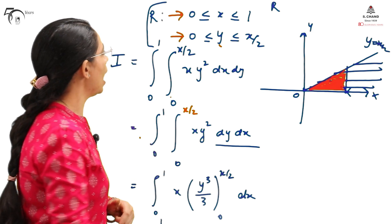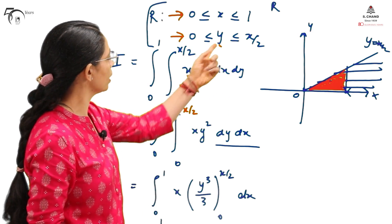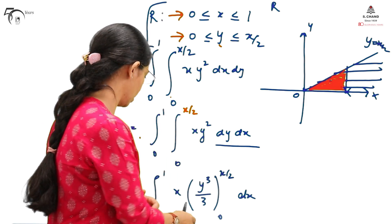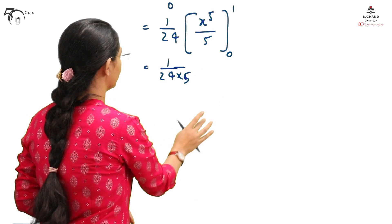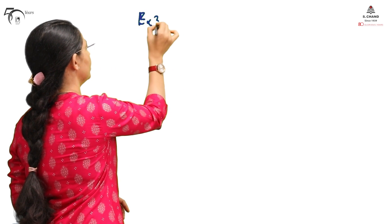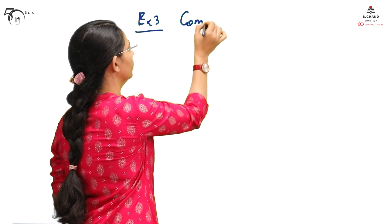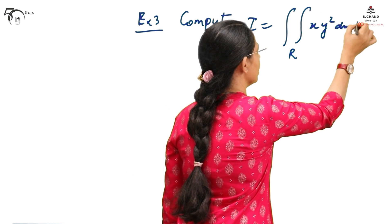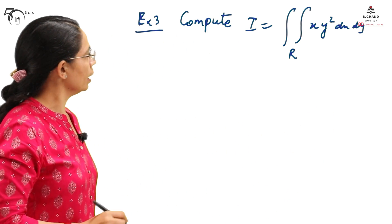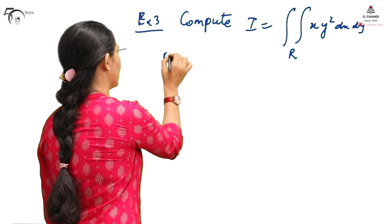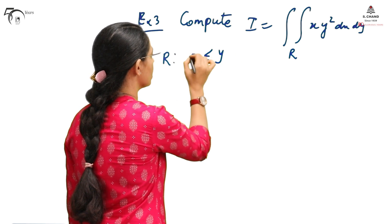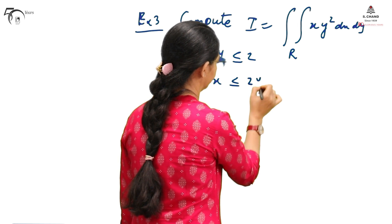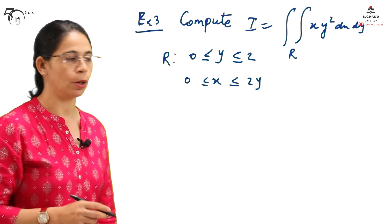Now we will take the same function and change the region of integration. In the previous example y was a function of x; in the next, x will be a function of y and y will take constant limits. This is Example 3: compute the same integral, but now R is the region where y is between 0 and 2, and x is between 0 and 2y. The first step is to sketch the region of integration.